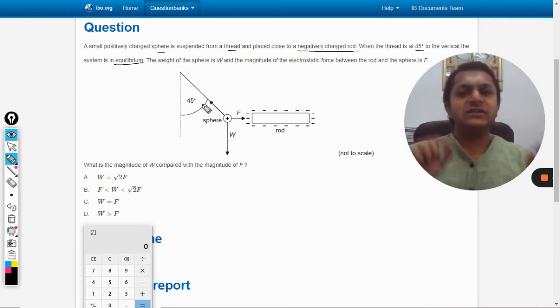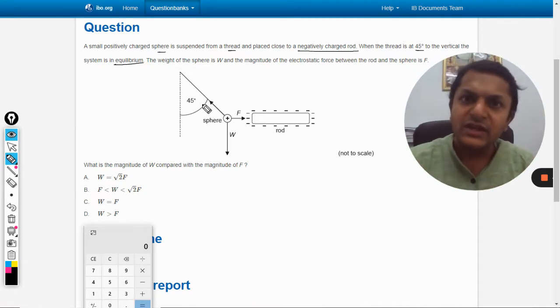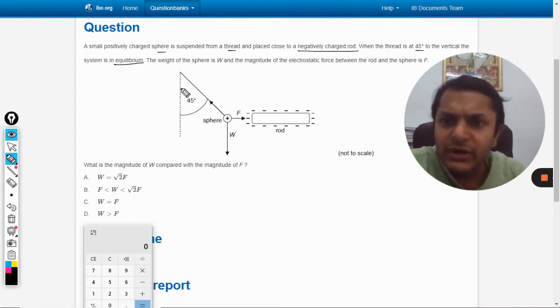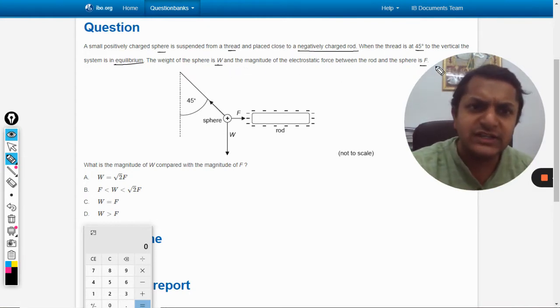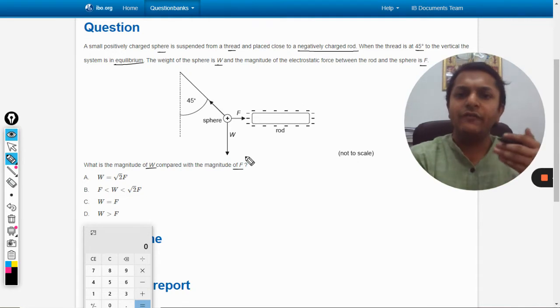At 45 degrees the system is in equilibrium, meaning F_net equals zero. Equilibrium means all forces balance each other; despite the forces, there is no motion. The weight of the sphere is W, and the magnitude of the electrostatic force is F. What is the magnitude of W compared with F? We need to find the ratio of W and F.